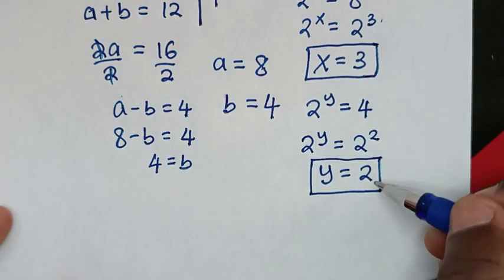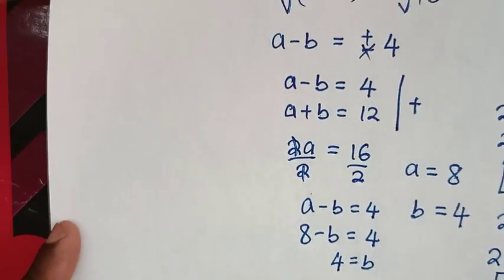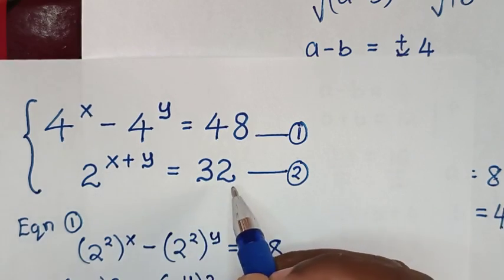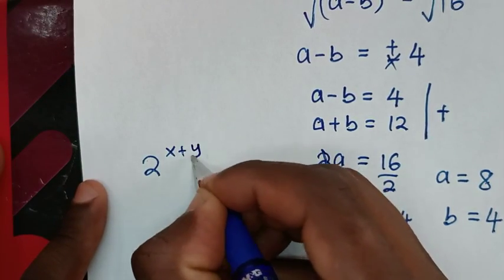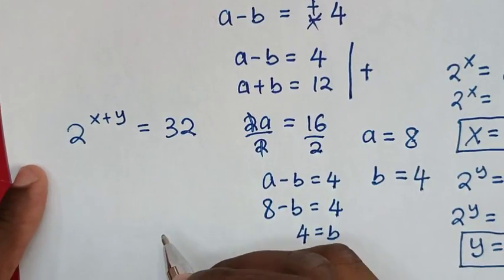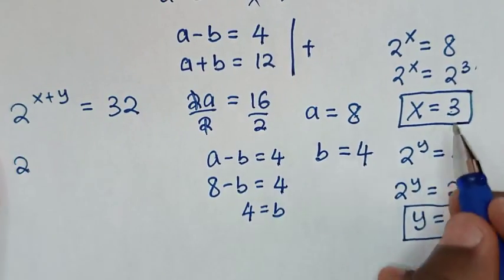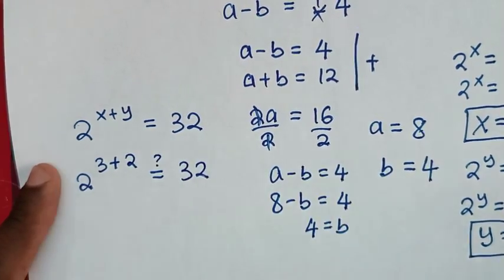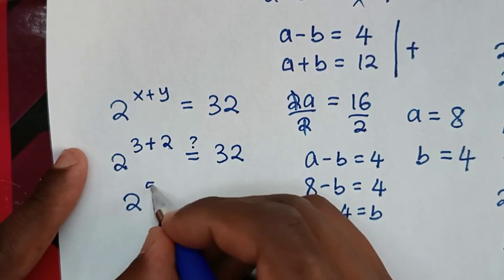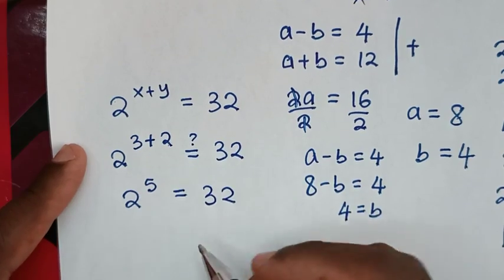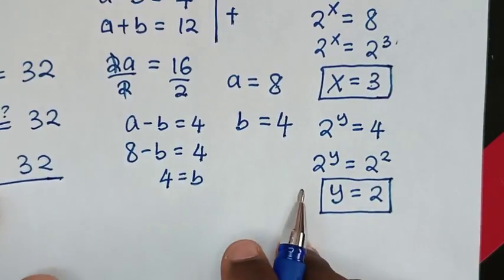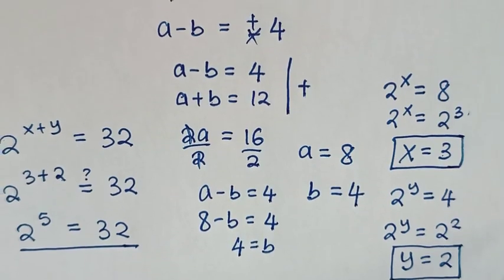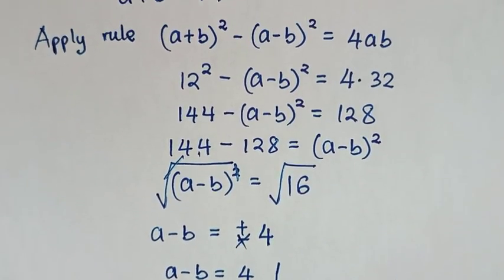Therefore x equals 3 and y equals 2. To check, we substitute into equation 2: 2 power of x plus y equals 32. With x equals 3 and y equals 2, it becomes 2 power of 3 plus 2, which is 2 power of 5, equals 32. Left side and right side are equal, confirming x equals 3 and y equals 2 are correct. Thank you, don't forget to subscribe to my channel, and see you in the next video.